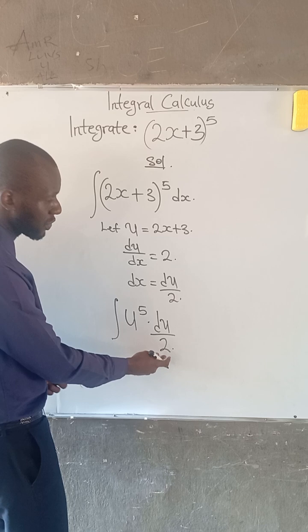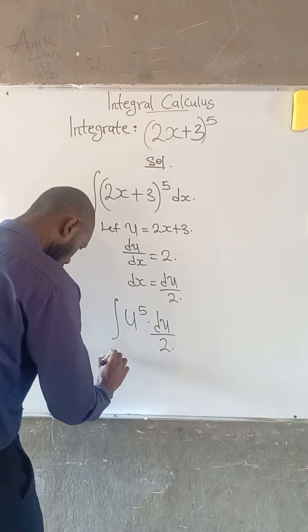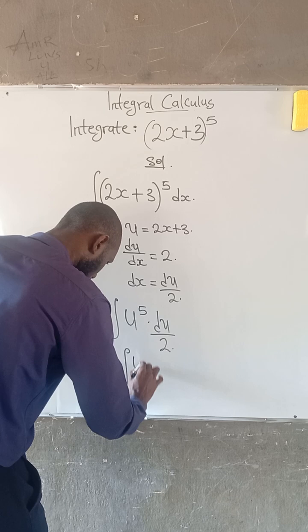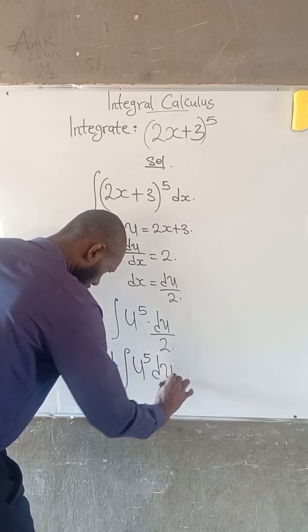So 2 is a constant term, so we can push it out. This is 1/2 integral of u to the power of 5 du.